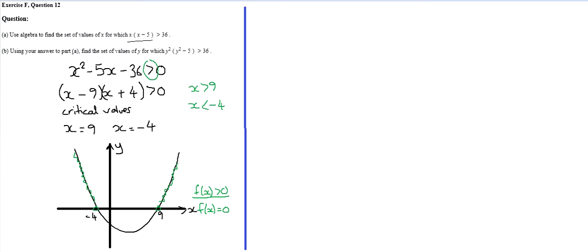So part B, it says using your answer to part A, so that normally means it's pretty straightforward, and you can just use these values here. And you'll notice that looking at here and here, it's very similar. However, the only difference is x is changed for y squared.